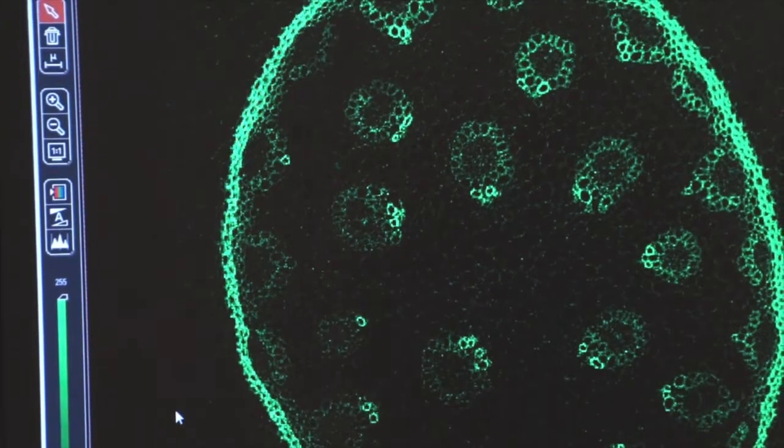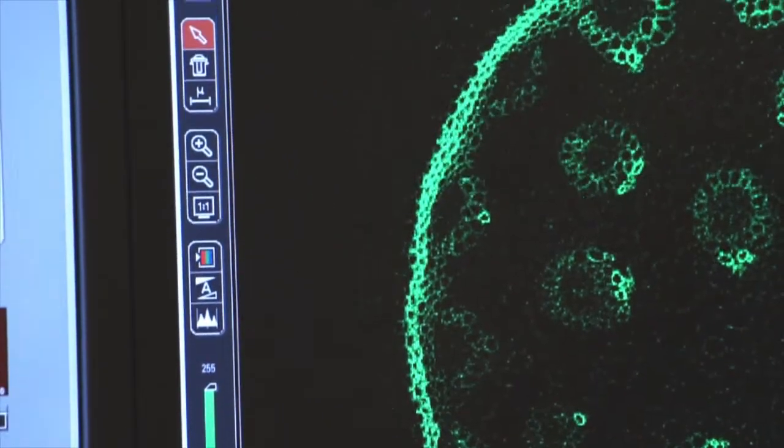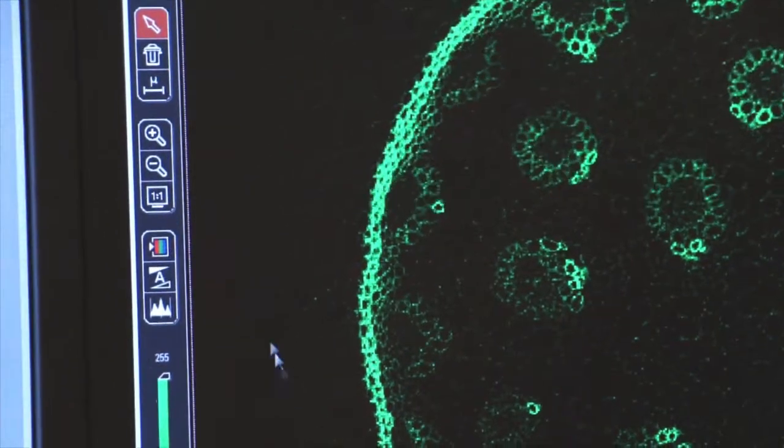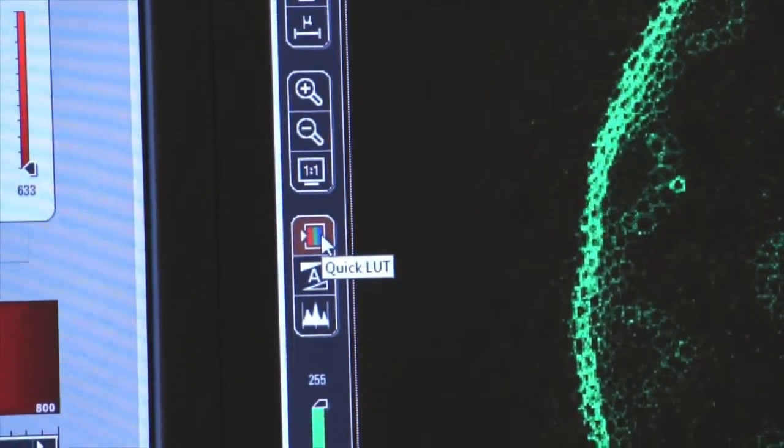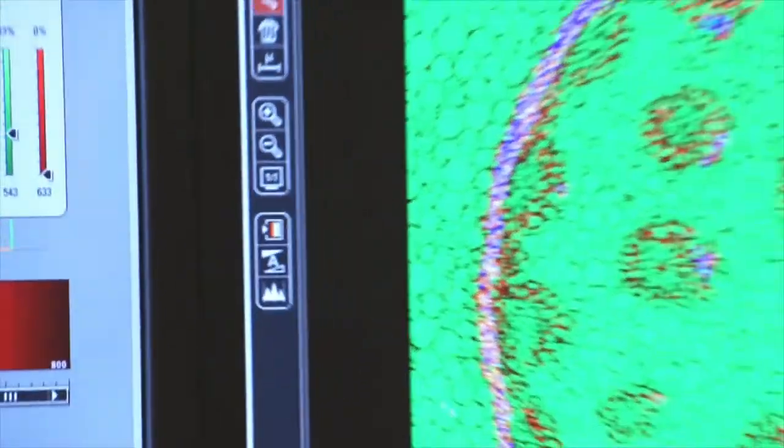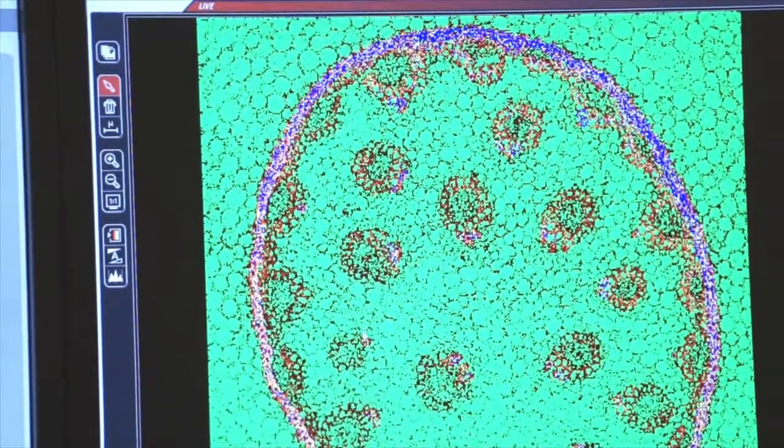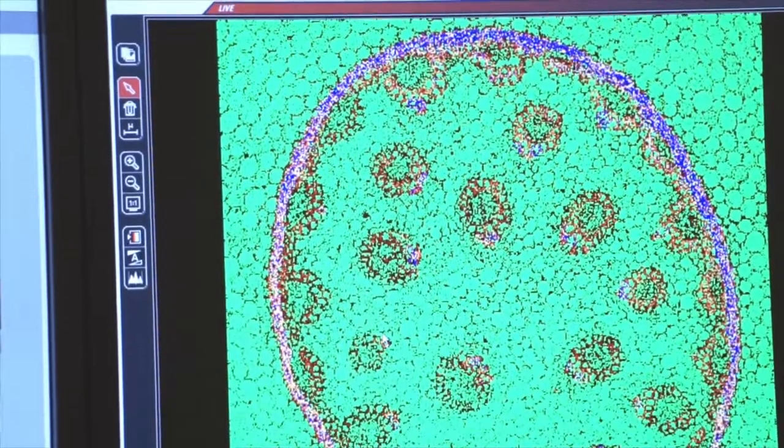We now have a live image on the screen, and I want to show you an easy way to set the gain and offset so your images are the crispest they can be. If you click on this little box here, this is the quick lookup table. You click on it once, it changes the color of your pixels to blues and greens that you can use to identify how your gain and offset should be set.